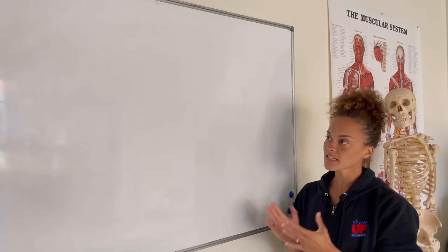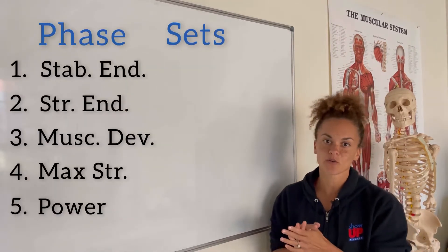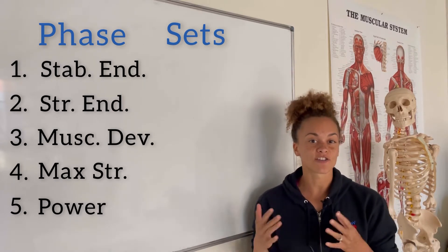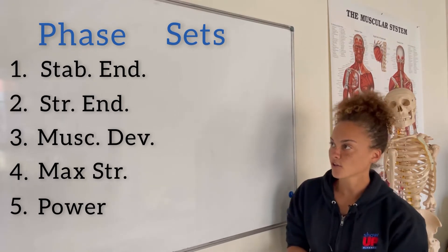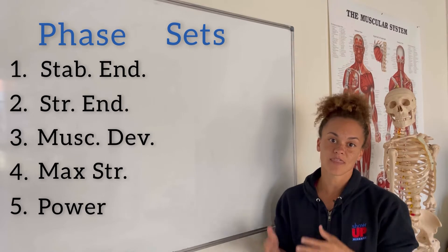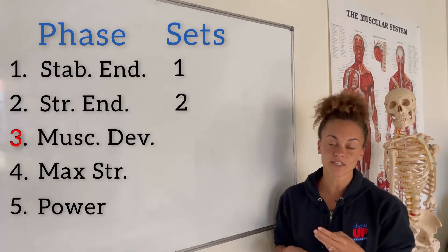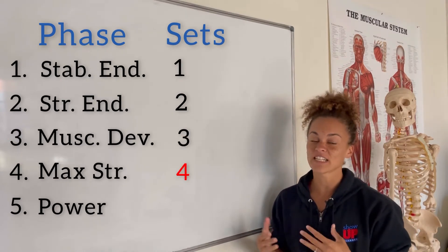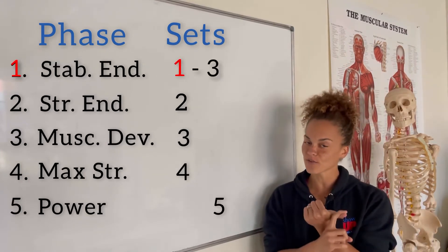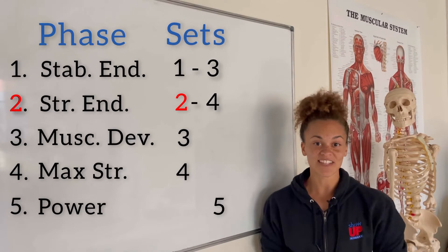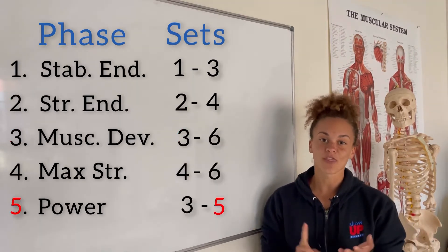Looking at sets first — for the most part, the tricks are going to be consistent. Phase 2 and 5 are supersets so they may be a little different, but overall it's pretty similar. Sets always start with the phase number: Phase 1 starts with 1, phase 2 starts with 2, phase 3 starts with 3, phase 4 starts with 4, and phase 5 ends with 5. So: phase 1 is 1 to 3 sets, phase 2 is 2 to 4, phase 3 is 3 to 6, phase 4 is 4 to 6, and phase 5 is 3 to 5 sets.